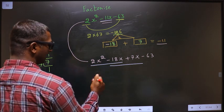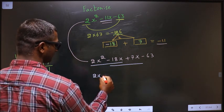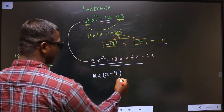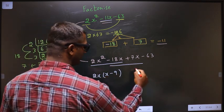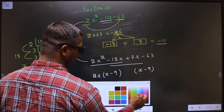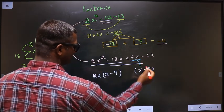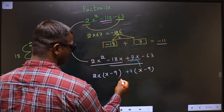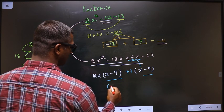From these 2, what can be taken out common is 2x. So here I get x and here I get minus 9. So whatever you got here, you should write the same thing here. Now from 7x, x is gone inside. So outside you get plus 7.